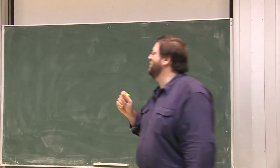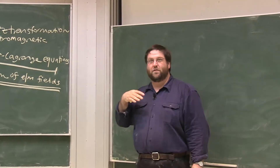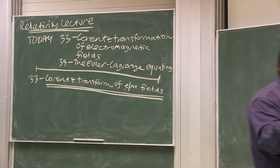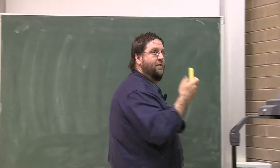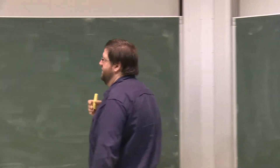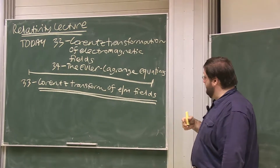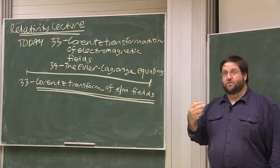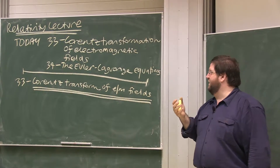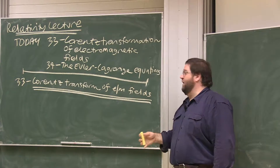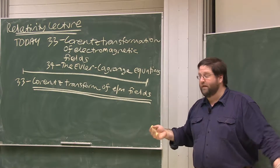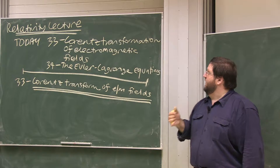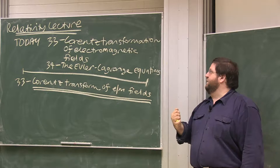Hello and welcome back to another installment — the final installment of relativity. Today we want to do two things in the context of classical electromagnetic fields. First, we want to learn how to Lorentz transform electromagnetic fields. Second, and this is one of the biggest and most profound ideas in all of physics, are the Euler-Lagrange equations — all in the context of classical fields from a relativistic perspective.